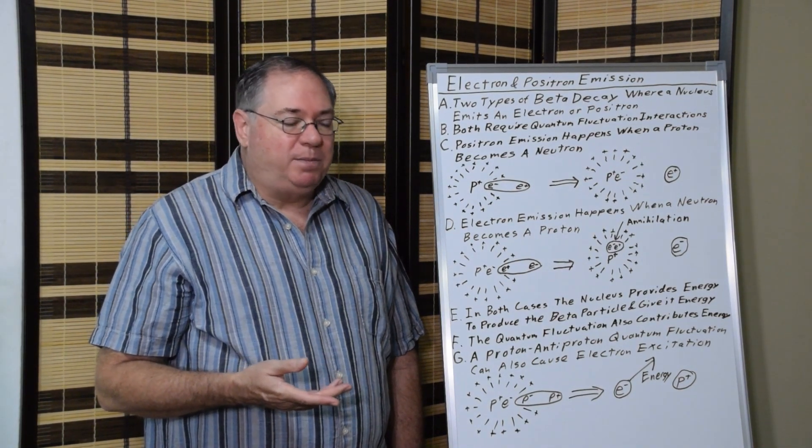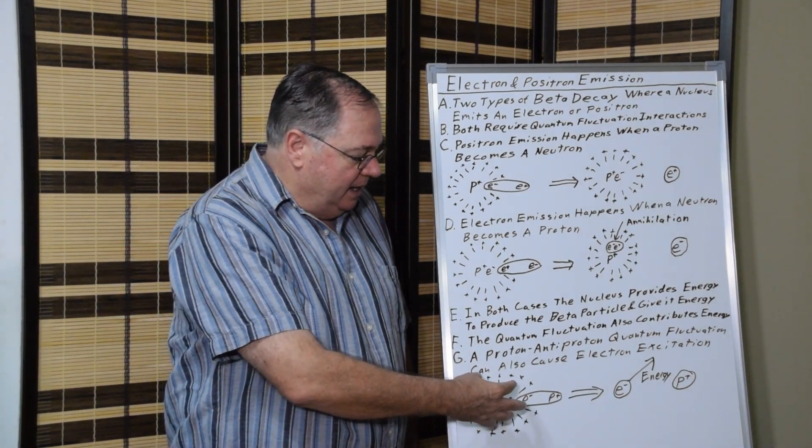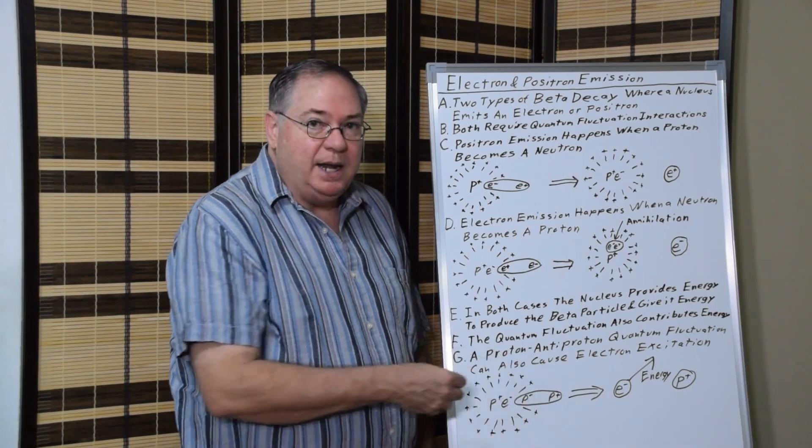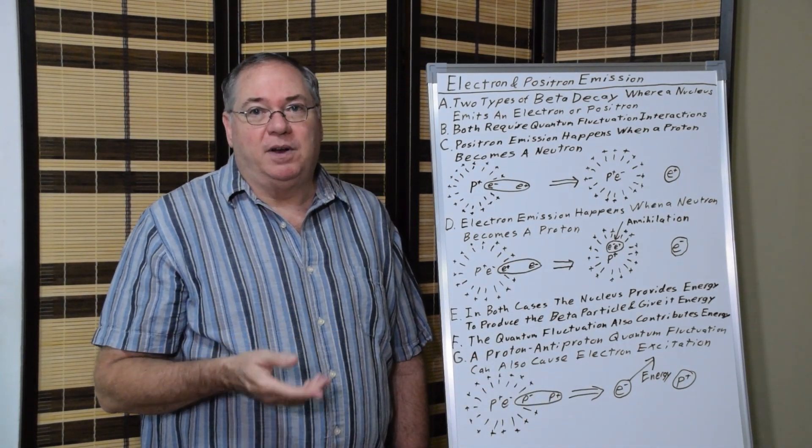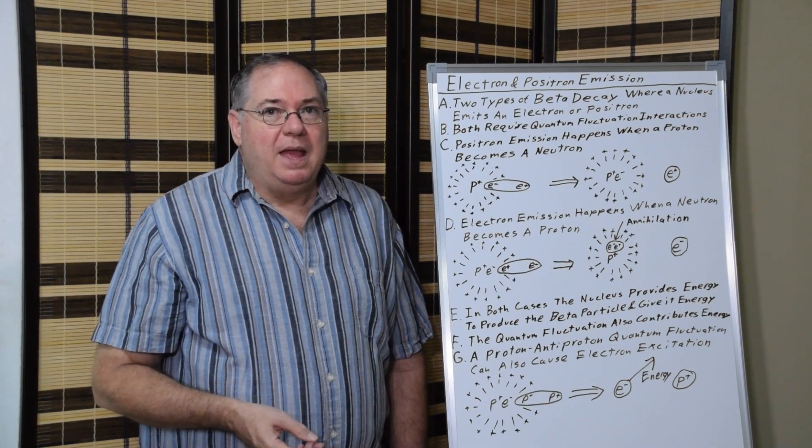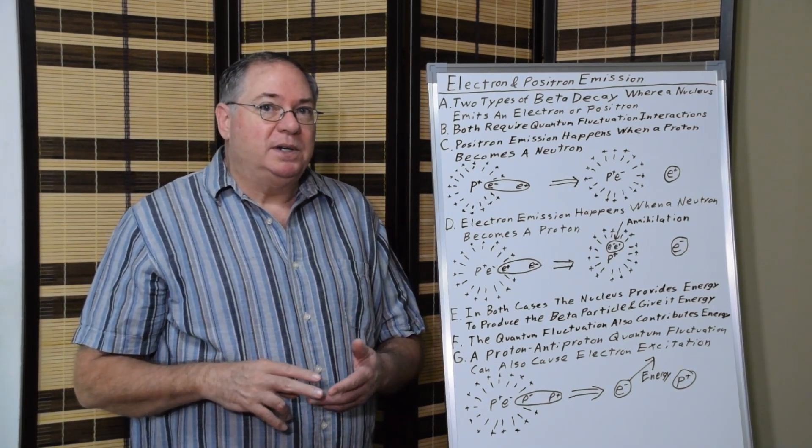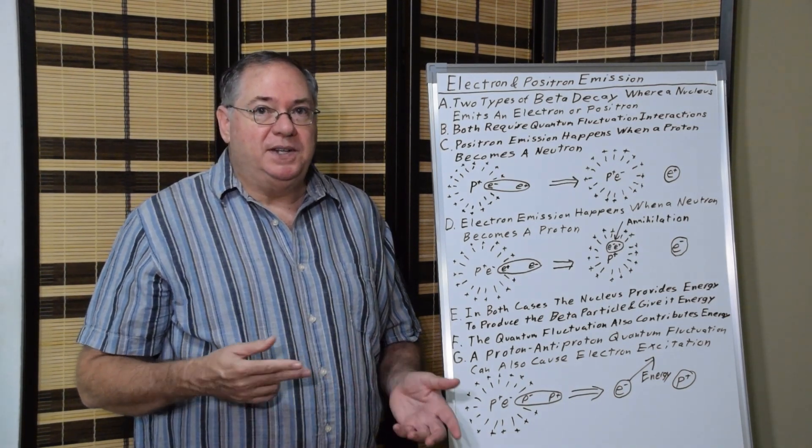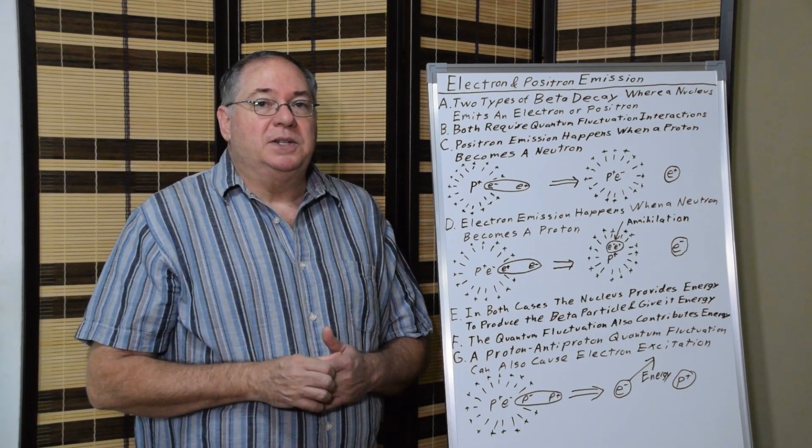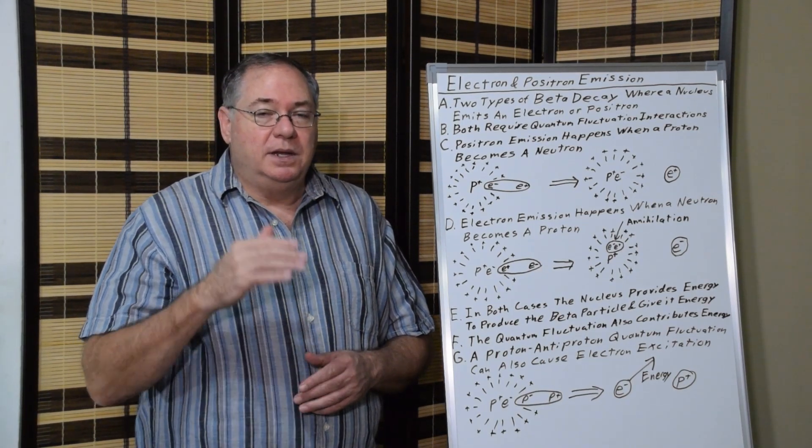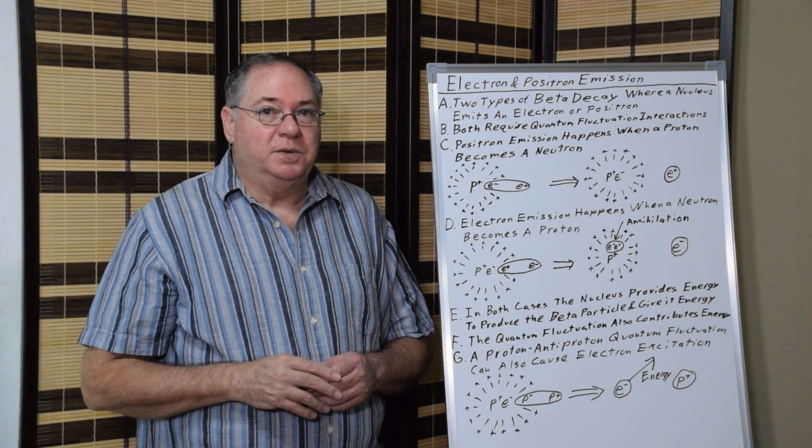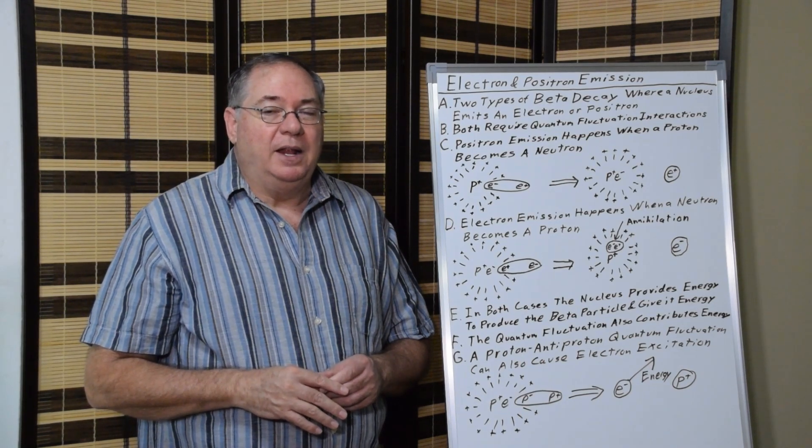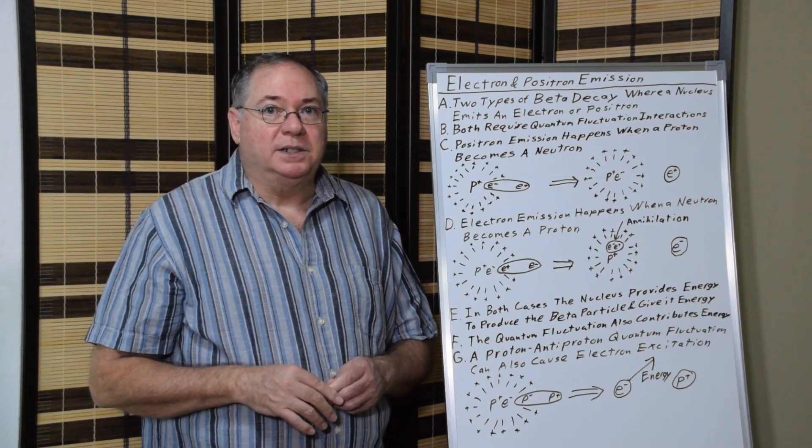We have a very simple process where the electron emission decay can be mediated by a proton-anti-proton pair instead of an electron-positron pair. That can produce two separate types of electron emissions with two separate types of energy. And we see that in some cases. There are some atoms that have two separate energy levels due to two different types of interactions. There may even be a third type of interaction, but I won't go into that.